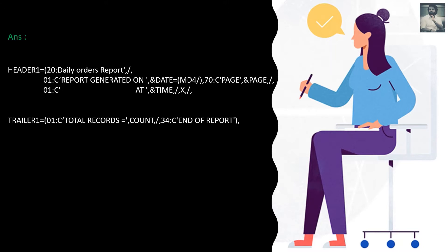This moves to the next line. In the third line, I'm giving some blank spaces because the time has to come exactly below the date, and I'm coding the time there, separated by slashes. In the trailer, from the first position it says 'Total Records' and the COUNT keyword gives the count of records in the input file. Then it moves to the next line, and from the 34th position — roughly the middle of the report — it says 'End of Report'.